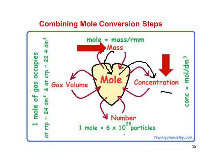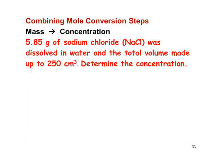As I've indicated, we're going to change from mass to concentration. We're going to change, first of all, from mass into moles. We cannot change directly from mass to concentration. So we've got 5.85 grams of NaCl.